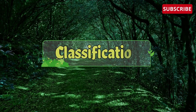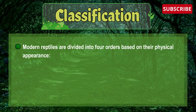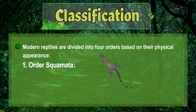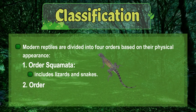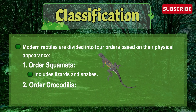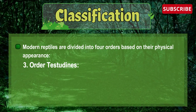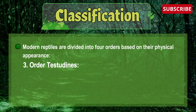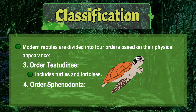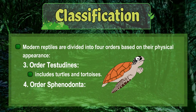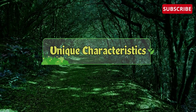Modern Reptiles are divided into four orders based on their physical appearance. Order Squamata includes lizards and snakes. Order Crocodelia includes crocodiles and alligators. Order Testudines includes turtles and tortoises. And Order Sphenodonta is the fourth order.